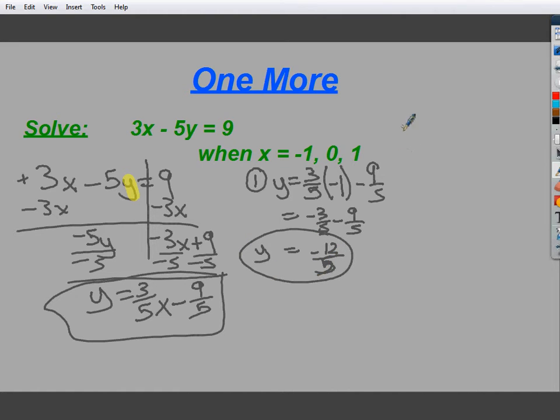Number 2. Y is equal to 3 fifths. And in parentheses, this time, would be the 0 minus 9 fifths. Well, 3 fifths times 0 is, of course, 0. So, what I'm left with is negative 9 over 5.